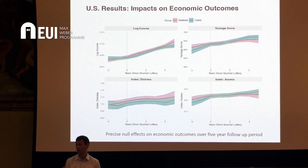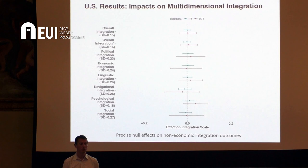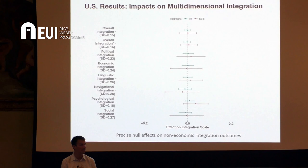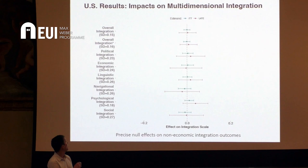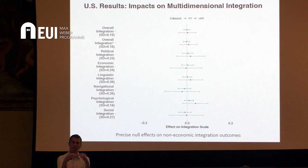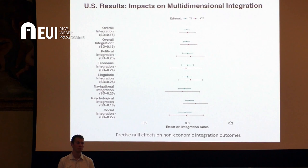What about other non-economic dimensions of integration? We used the IPL 12 multi-dimensional measure of integration, asking about political, economic, linguistic, navigational, psychological, and social integration. For all of these different dimensions — including the overall holistic integration index — we get precisely estimated null effects, indicating this basically did not make a tangible difference not only in terms of economics but also in terms of other dimensions of integration. As a political scientist, you might look at the political integration dimension and find essentially absolutely nothing happening there.